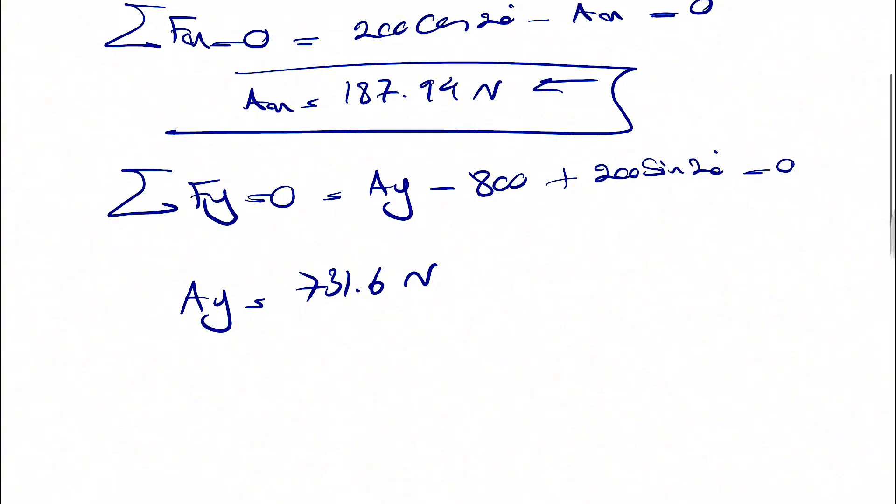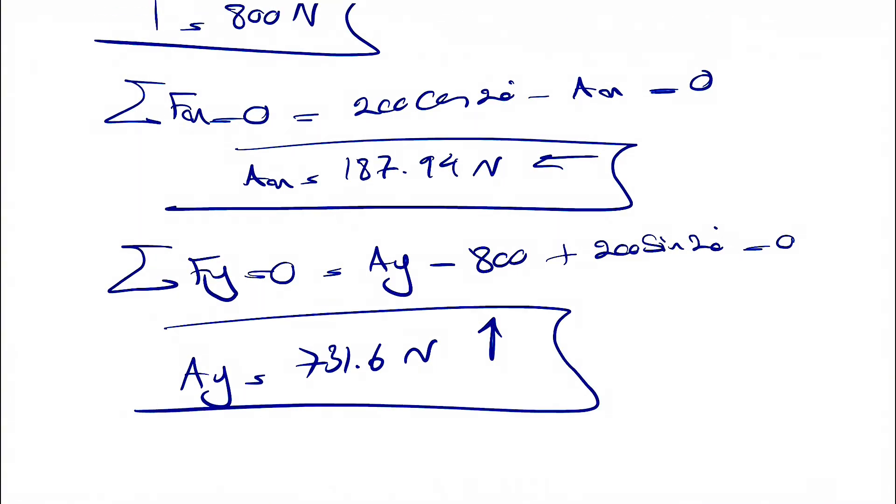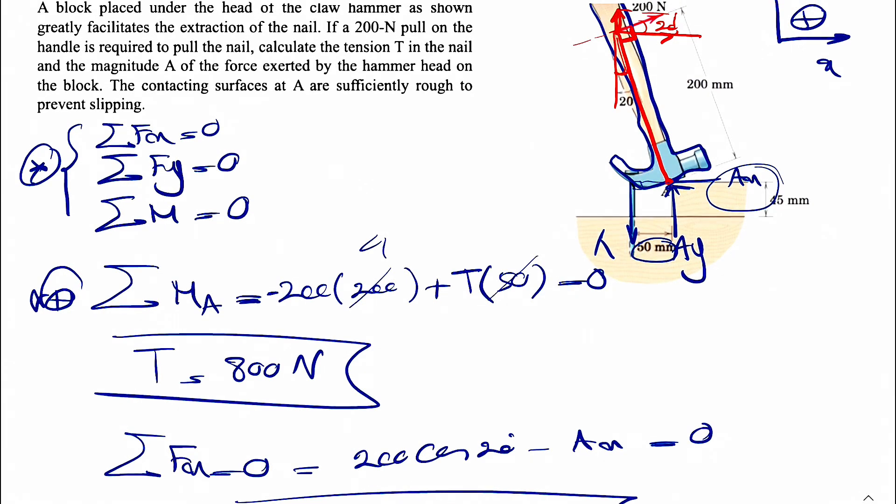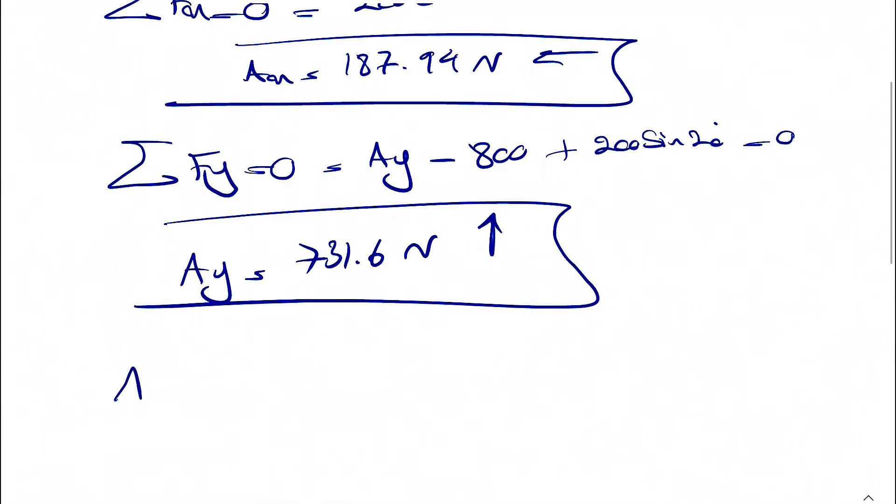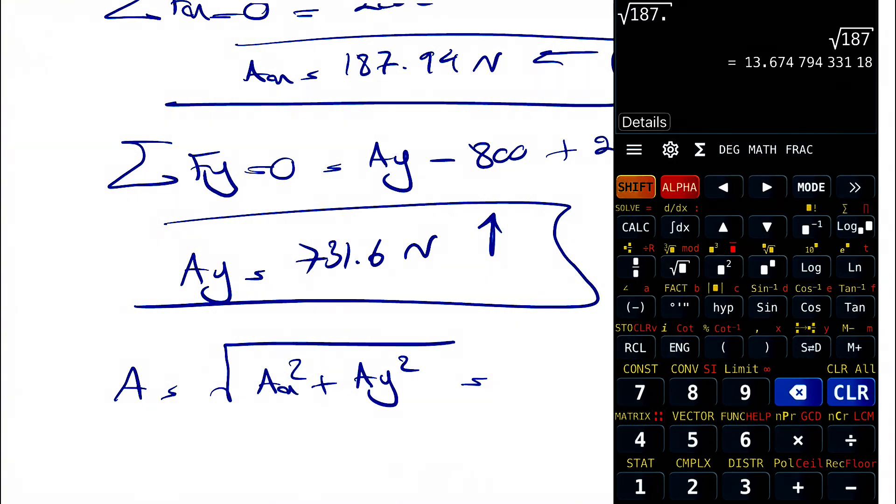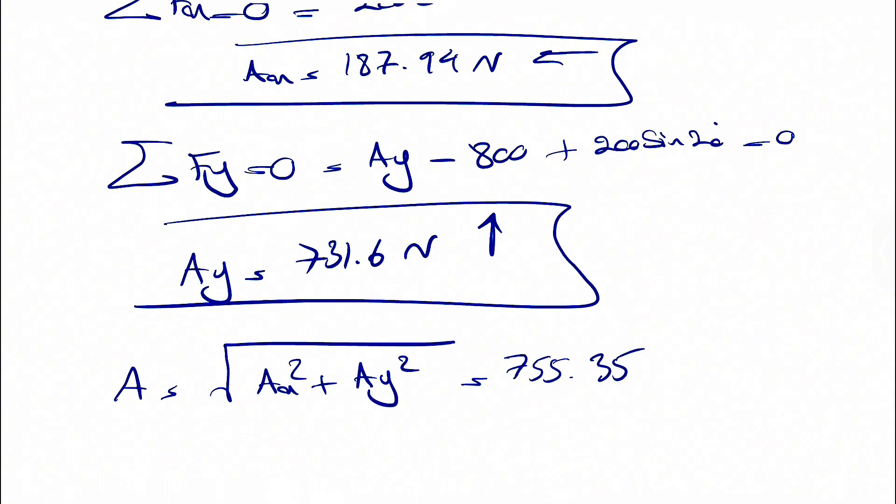Again, no negative sign. That shows our assumption for AY was correct too. And if we just want to find the magnitude of the force at A, which is what the question is asking for, we simply have the square root of AX squared plus AY squared, which is 187.94 squared plus 731.60 squared. That's going to give us 755.35 newtons, and the final answer for this question.